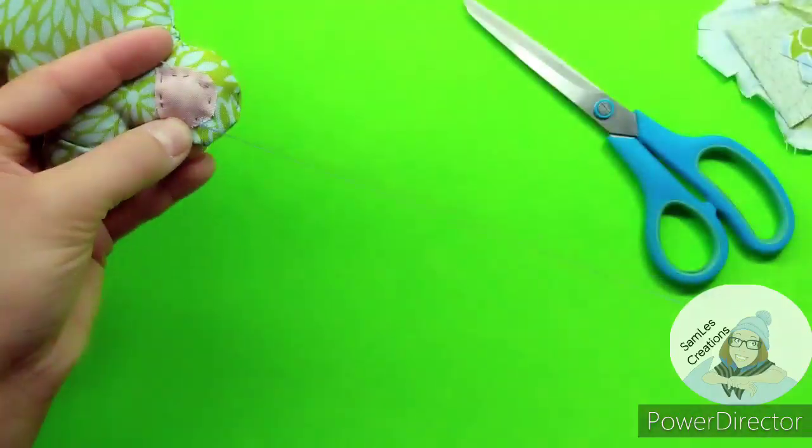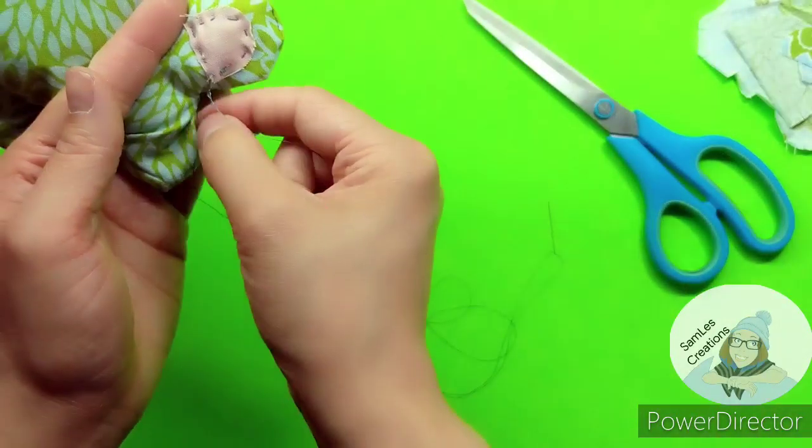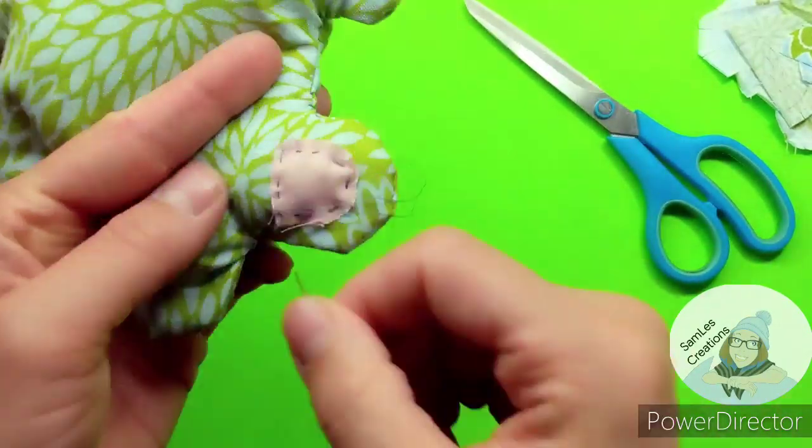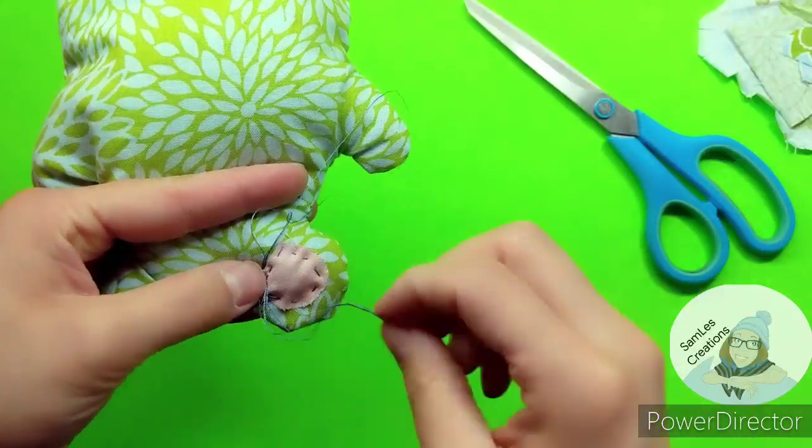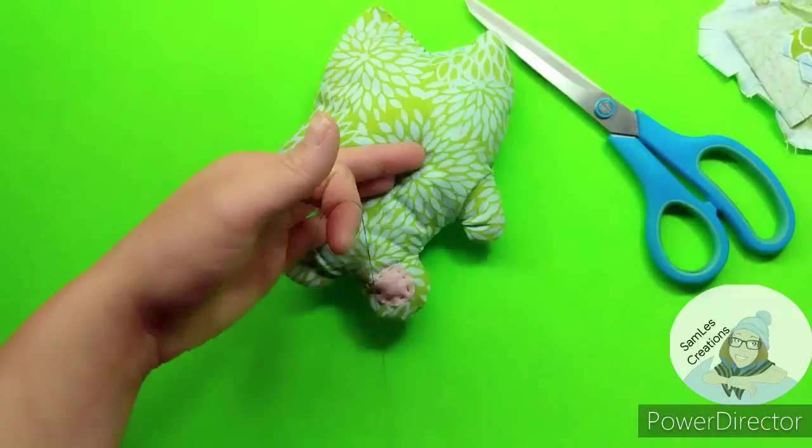If you sew these pieces on after you make the entire stuffed animal, make sure you don't sew it to the back fabric, the back side of the stuffed animal, on accident.